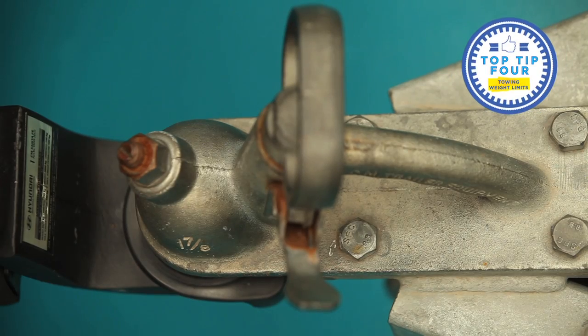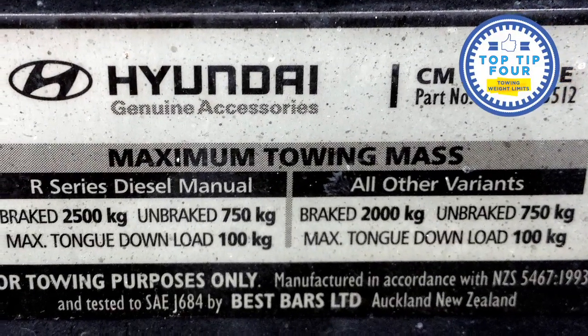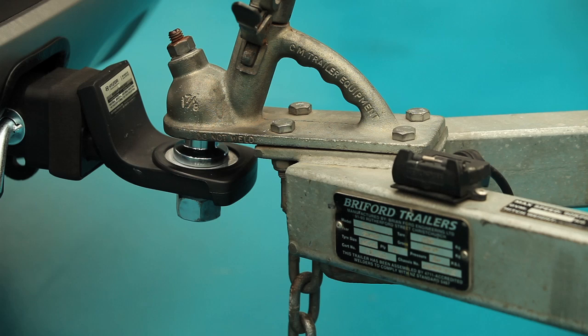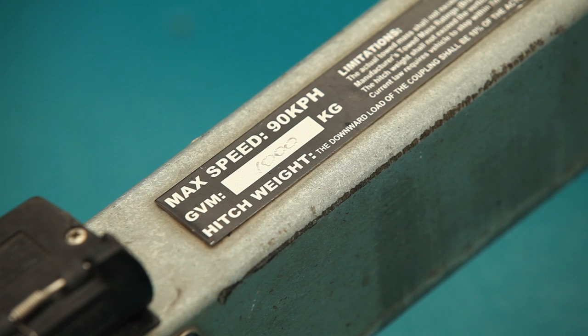Check your towing weight limits. 750 kilos is maximum for a trailer with no brakes. Check the maximum tow rating for your vehicle with a braked trailer and don't exceed this limit.